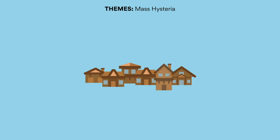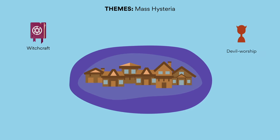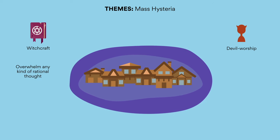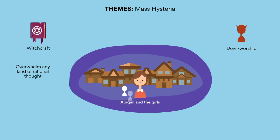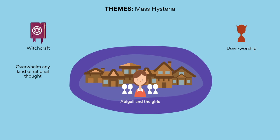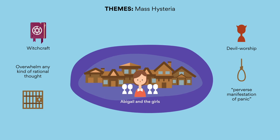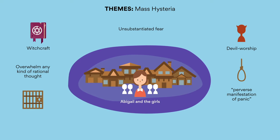Mass hysteria. Mass hysteria is one of the most significant themes of the play, as Miller depicts the entire town of Salem engulfed by the superstition of witchcraft and devil worship. The community-wide fear of consorting with the devil is shown to overwhelm any kind of rational thought, as one rumor created by Abigail and the girls leads to dozens of incarcerations and executions in a matter of days. The Crucible depicts the perverse manifestation of panic that can occur from unsubstantiated fear.